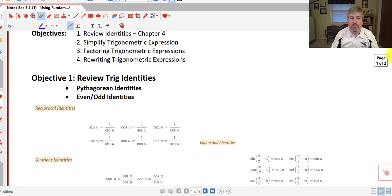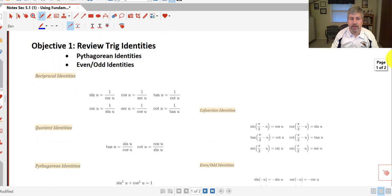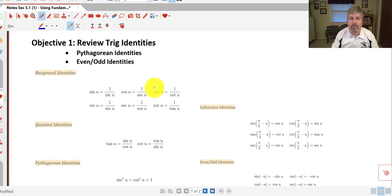Our first objective here is to review our trig identities. We should all be familiar with our reciprocal identities and our quotient identities with tangent and cotangent. And hopefully we all remember our cofunction identities, things such as the cosine of an angle equals the sine of its complement, and vice versa. And that works for tangent and cotangent,